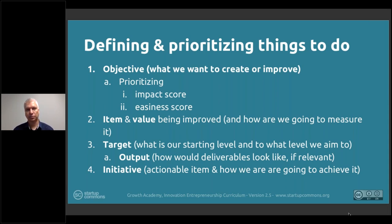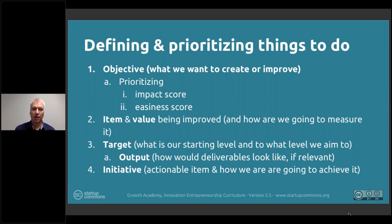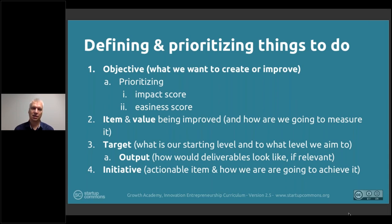For example, if the goal is to improve conversion rate from 2% to 4%: the item is conversion rate, the value is the conversion rate itself, the starting point is 2%, the target is 4%, and the output is documented proof that conversion rate is now at 4%. It can be as simple as that.